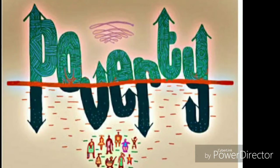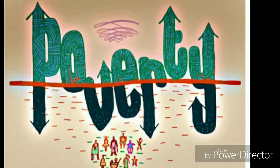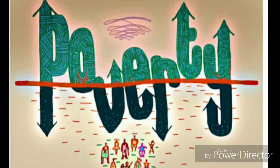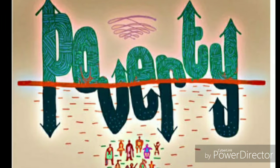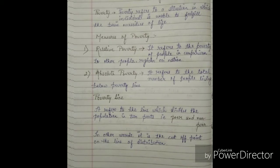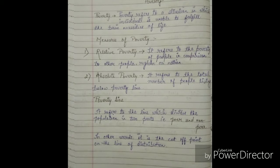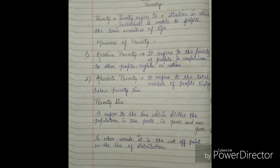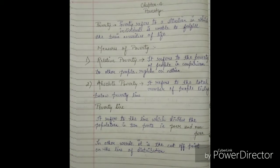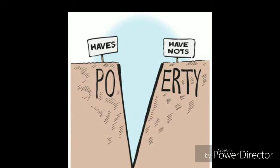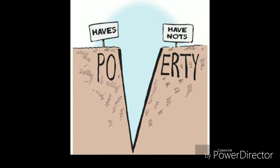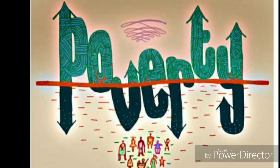Now we will see the poverty line. Poverty line refers to the line which divides the population into two parts — on one side the poor, and on the other side the non-poor. In other words, it is a cut-off point on the line of distribution, bifurcating those living above the line, who are non-poor, and those living below the line, who are poor.